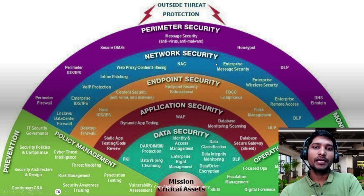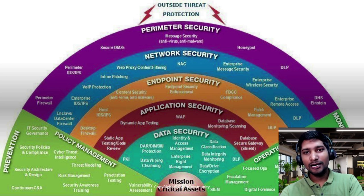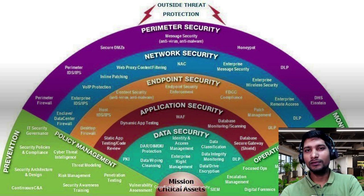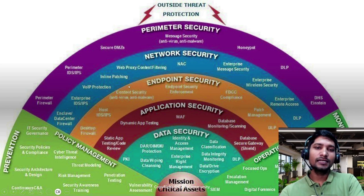Then we come to endpoint security — how we can secure the endpoint. At the endpoint we have antiviruses and EDR to check for vulnerabilities, and a firewall. If you have a laptop running Windows, there should be Windows antivirus and an internal firewall. Content security includes antivirus and anti-malware. Host IDS and IPS — intrusion detection system and intrusion prevention system — are also part of endpoint security.